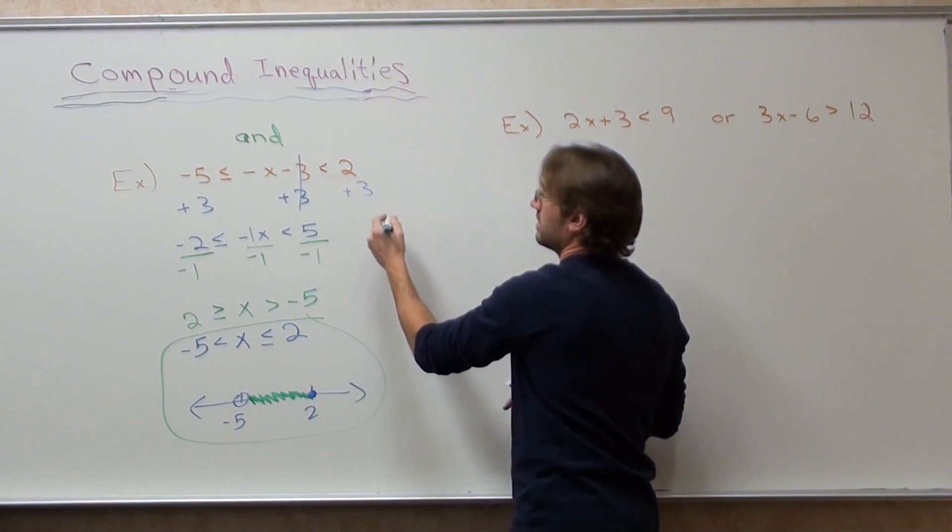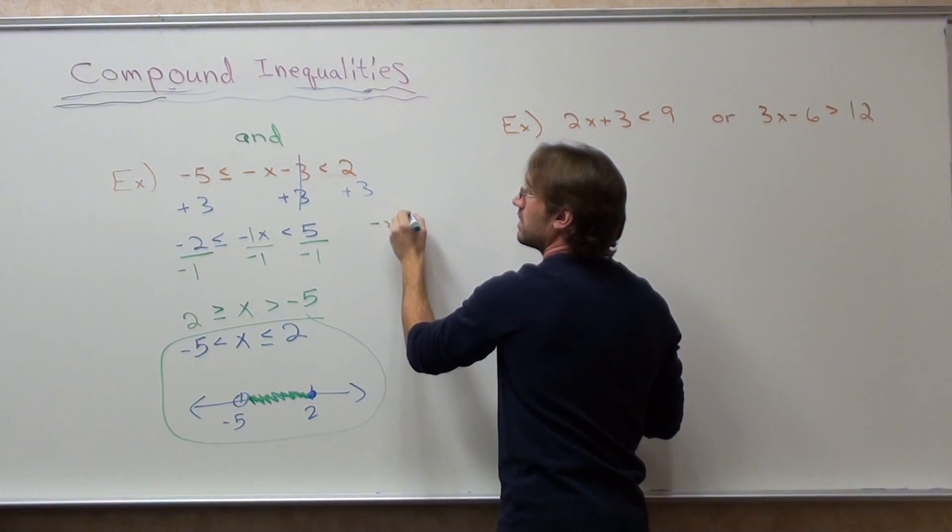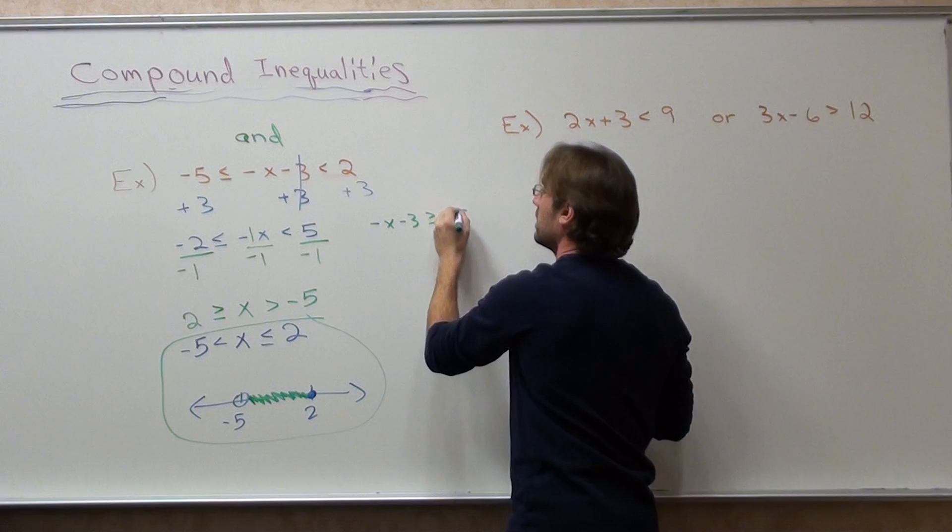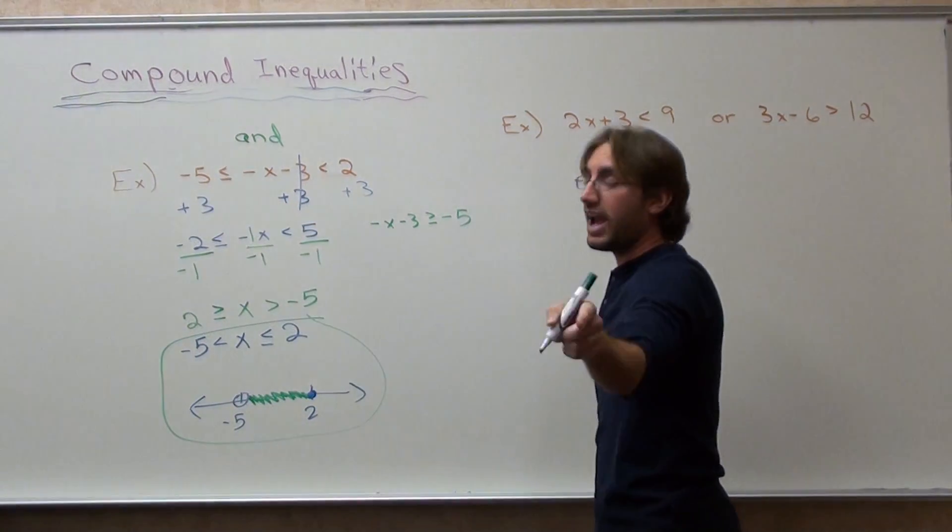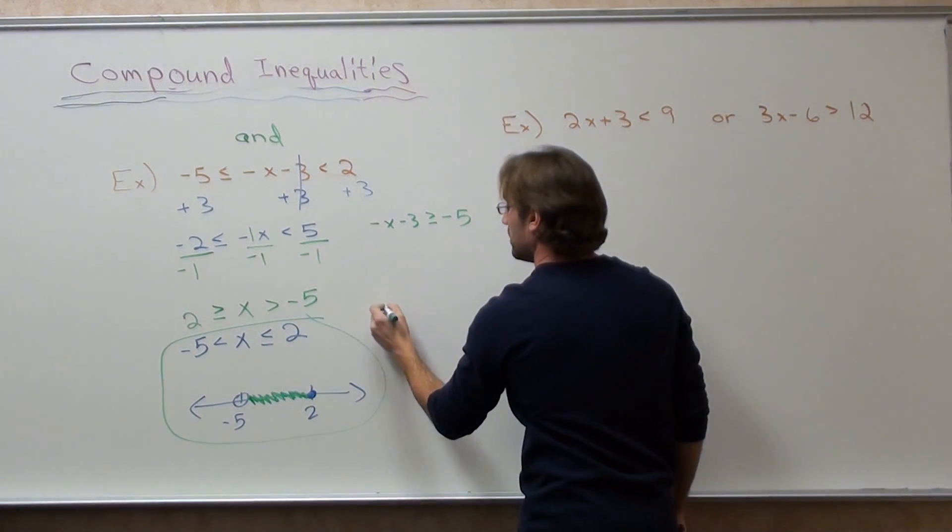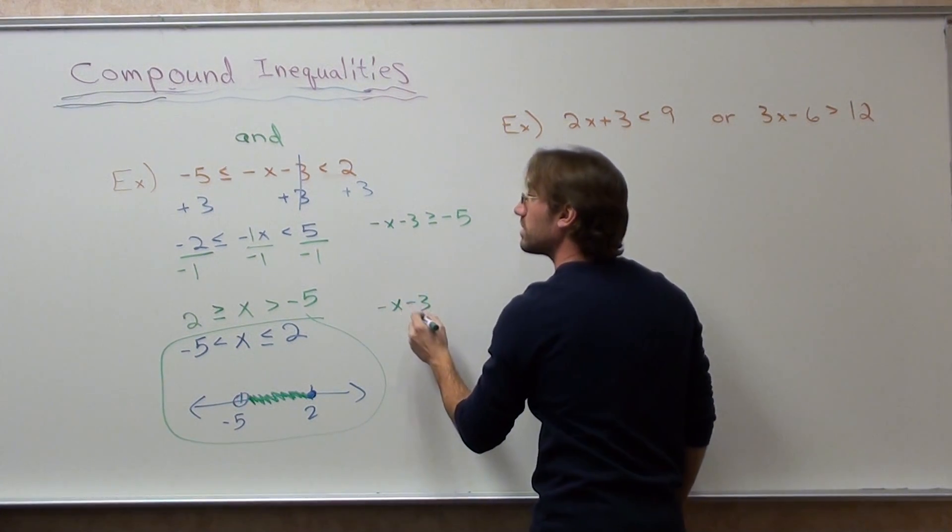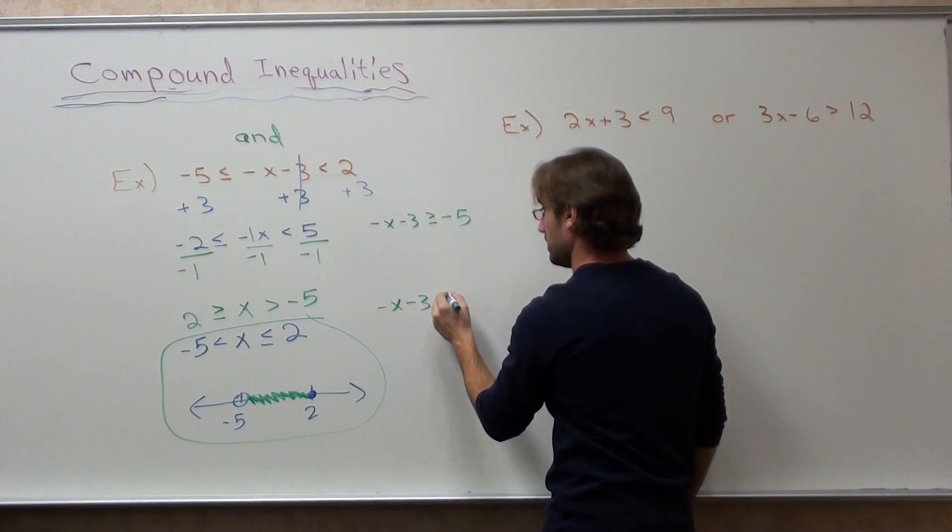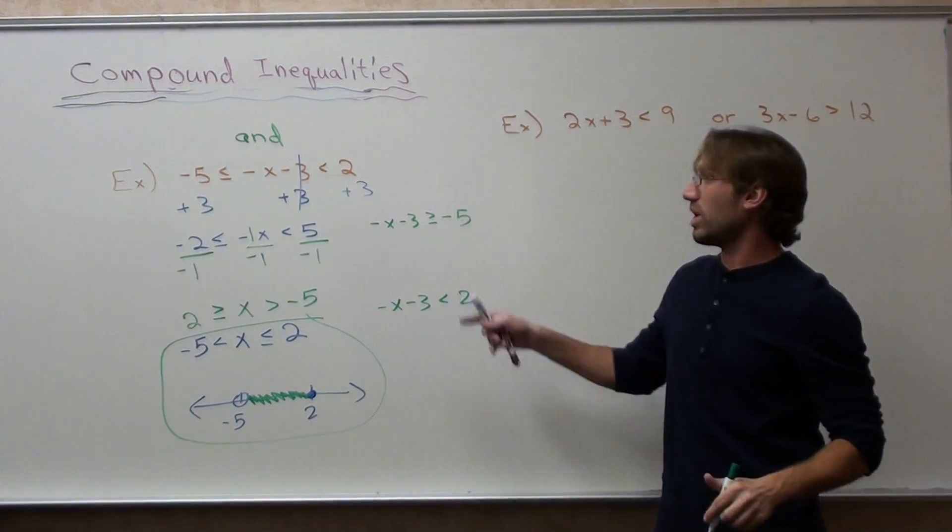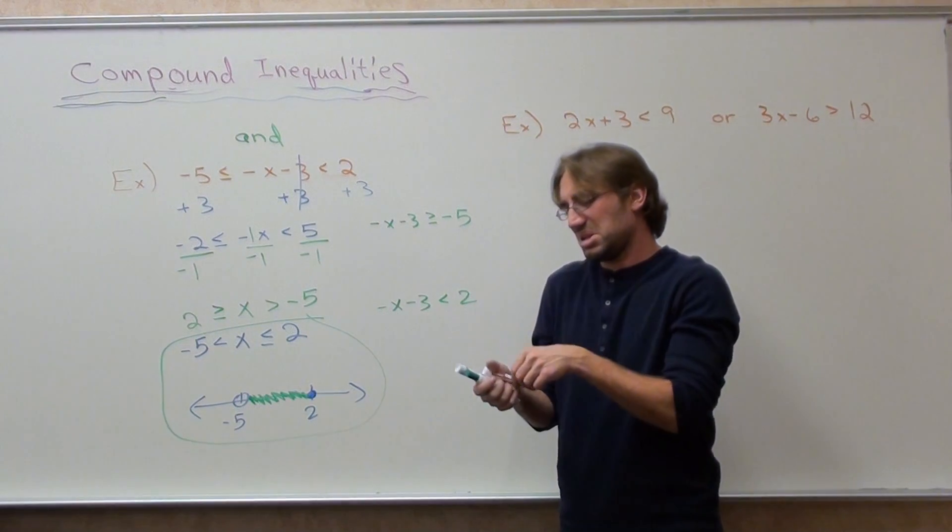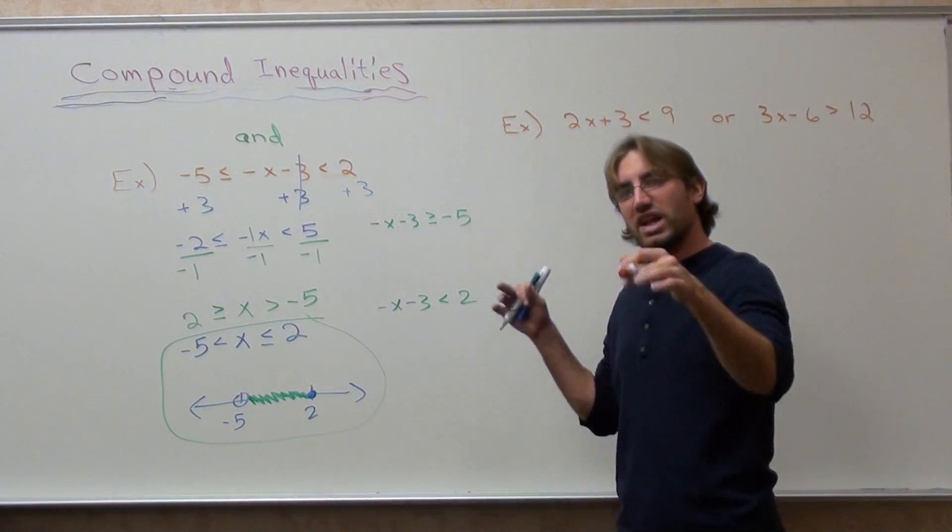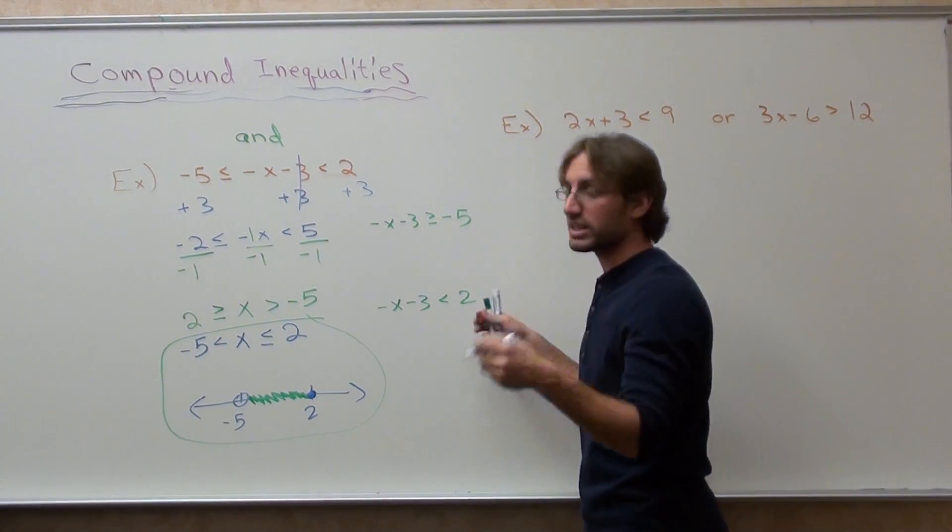I'm going to treat this like two different problems. I'm going to make this negative x minus 3 is greater than or equal to negative 5. It's still greater than or equal to negative 5. And x minus 3 is less than 2. So I'm going to write them as two separate problems. Although you could do this, or you could do this, it doesn't matter. Whichever way is easier for you, that's the way you do it. So I'm going to go ahead and solve for x on both of them.